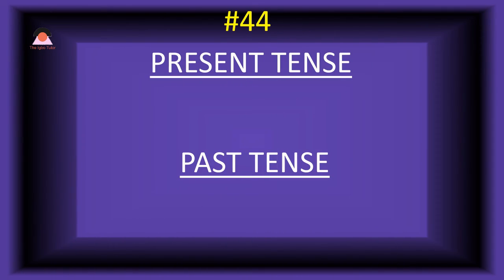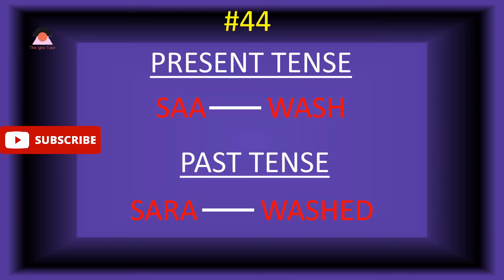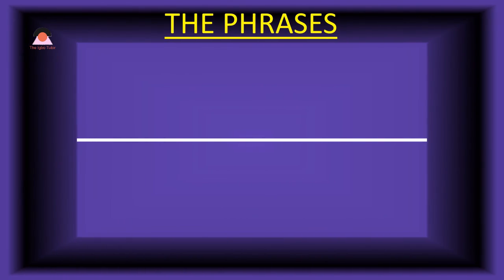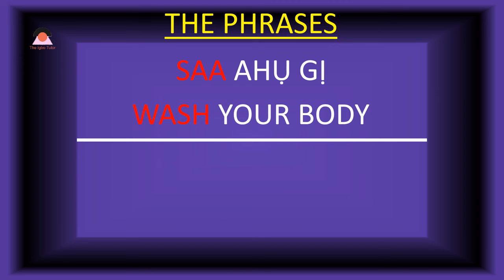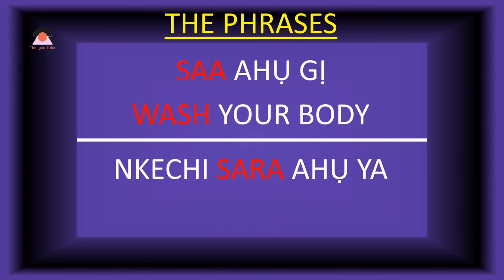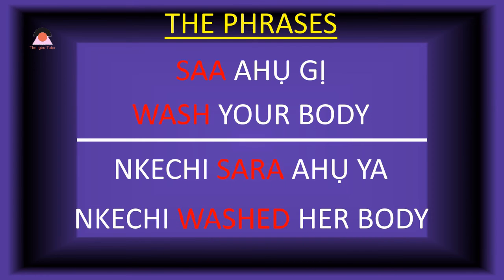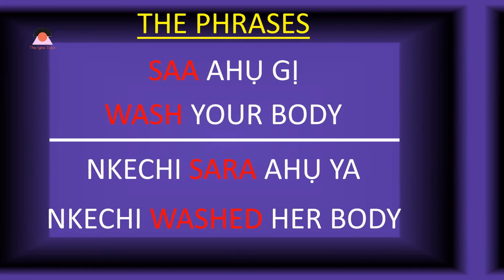Word number forty-four: 'saa,' meaning 'wash.' Some also say 'sacha' — it's the same thing. The past tense is 'sara,' or 'sachara.' Present tense phrase: 'saa ahongi' — wash your body. Past tense: 'Nkechi sara ahongi' — Nkechi washed her body.